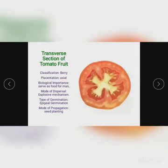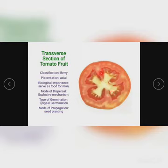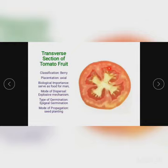This specimen is a transverse section of tomato fruit, cut the same way, showing vividly the placentation. You can see it has lobes — it is lobulate. The classification is that it is a berry. The placentation is axial — it has axial placentation. You can see this structure here looking like rims; this is the axial placentation. These are the seeds, and the attachment of seeds to the placenta is called placentation.